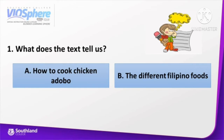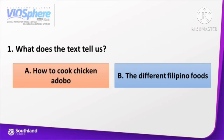Sample question from the given text. Number 1: What does the text tell us? A. How to cook chicken adobo, or B. The different Filipino foods. Very good! The correct answer is letter A — how to cook chicken adobo.